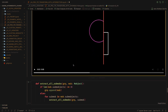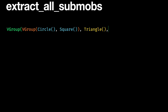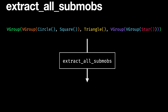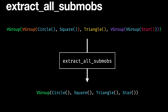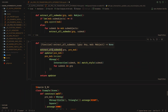The easiest way to solve this is to create a recursive function that returns all the sub-objects into a one-dimensional VGroup. In this way, we no longer have to worry about the number of sub-objects that an object can have. This solution isn't perfect, but it works for most cases.